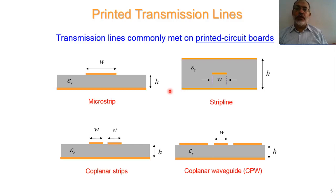After introducing the stripline, another configuration was introduced by removing the upper ground plane and the dielectric material on that side, leaving only the strip above a grounded dielectric slab. This configuration is known as microstrip line.